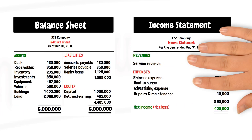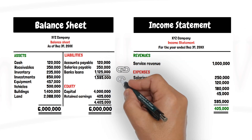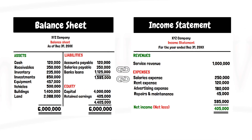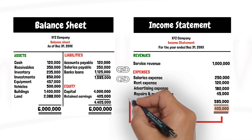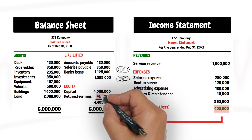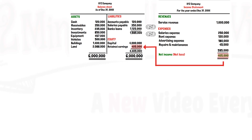There is a link between the income statement and the balance sheet. The income realized or losses incurred in the income statement is reflected in the equity section of the balance sheet through the retained earnings line item.